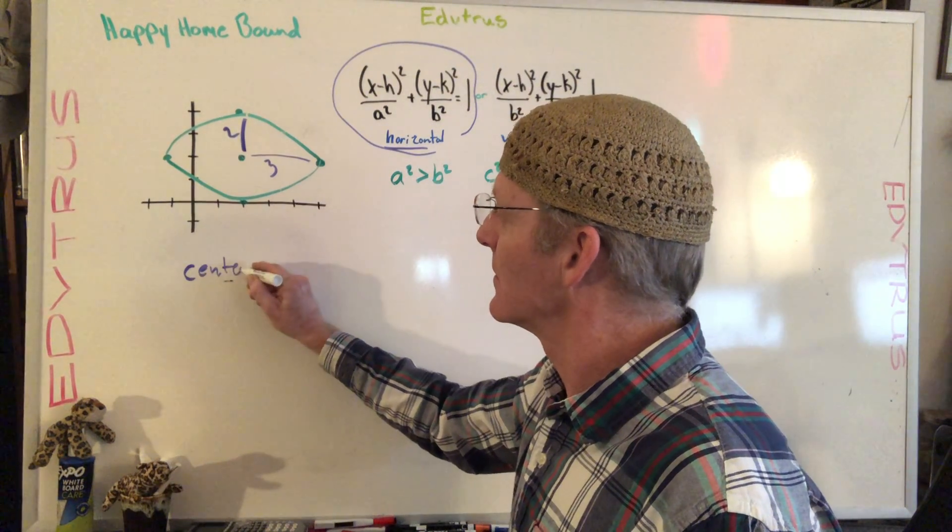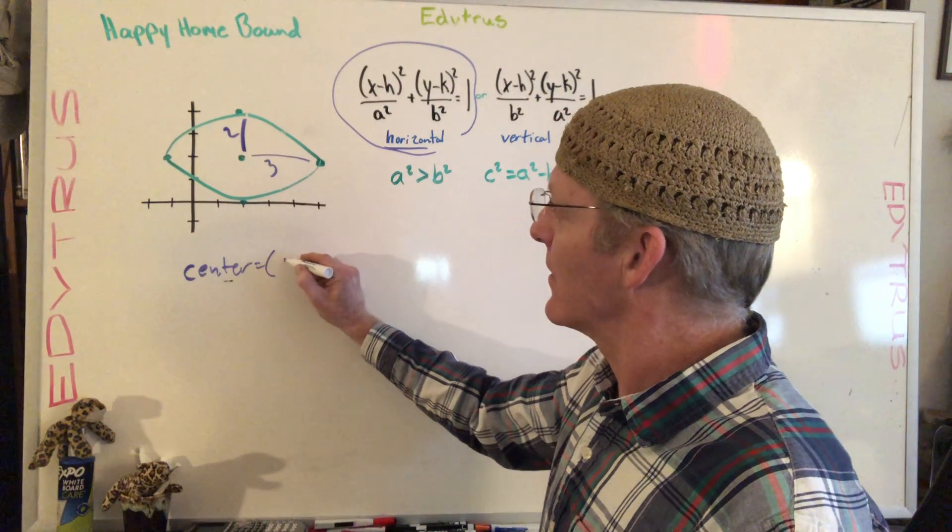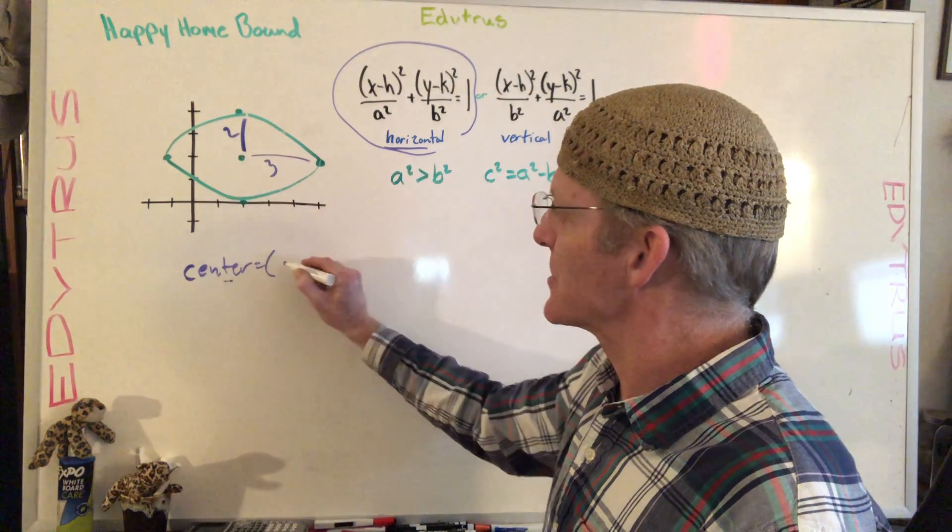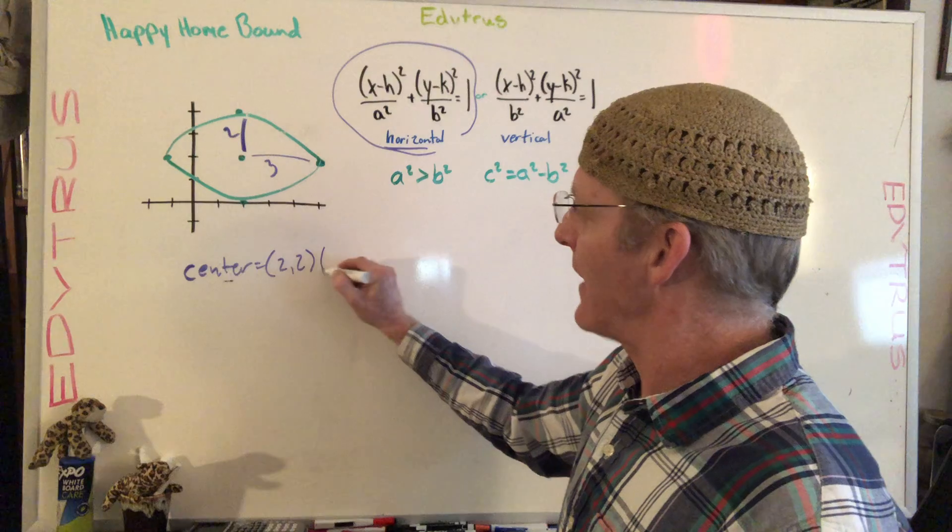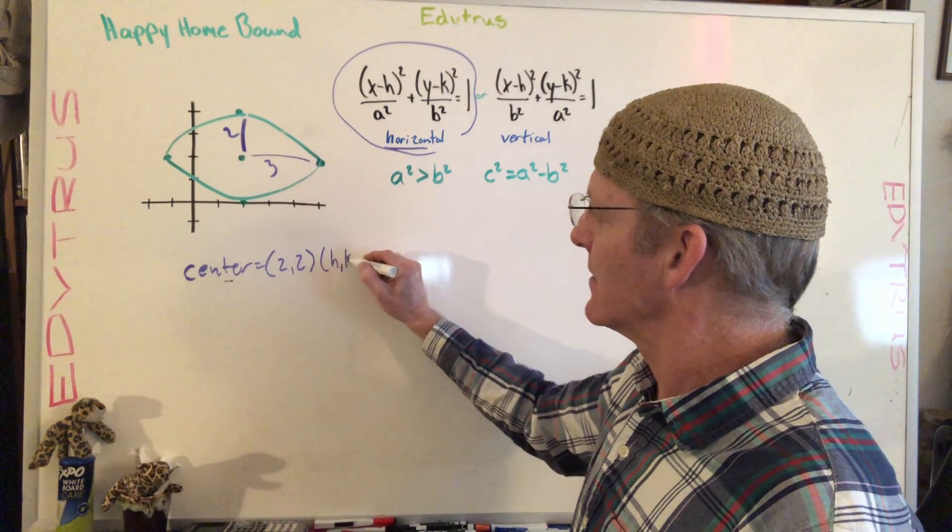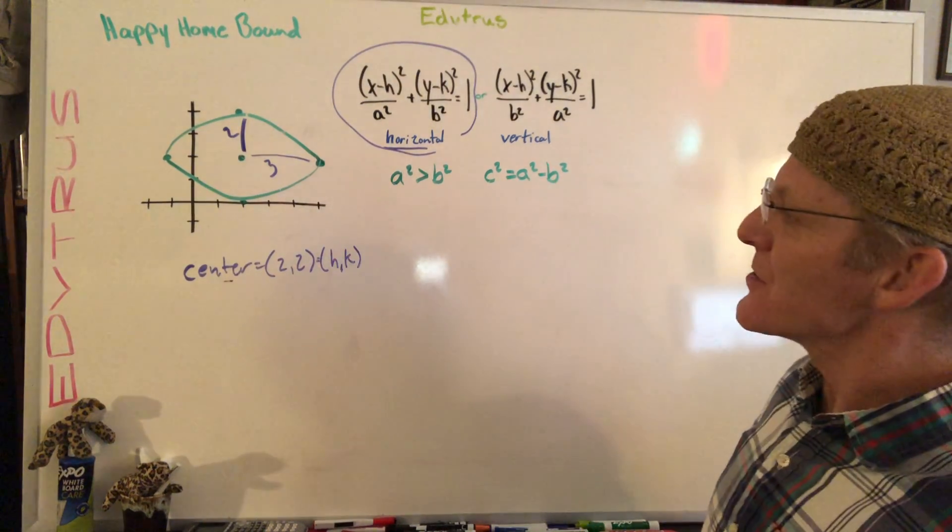So in this case we know the center, and that's at 2 comma 2, and that represents H and K.